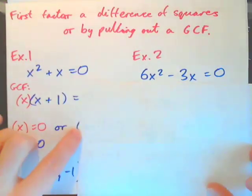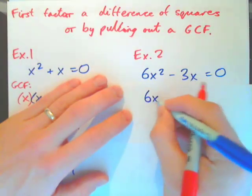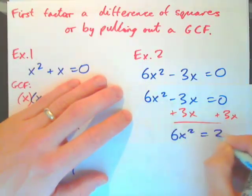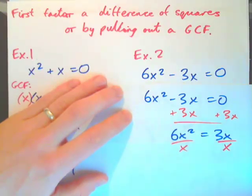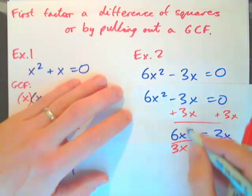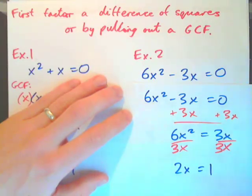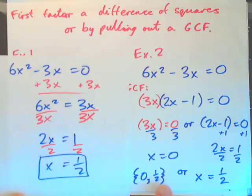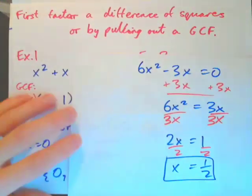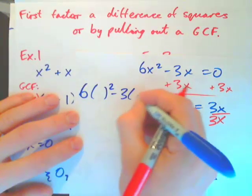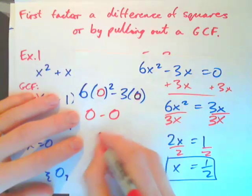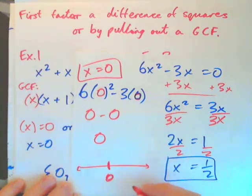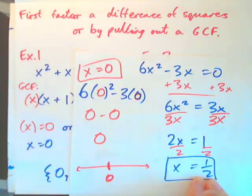Just to show you a common mistake: if you took 6x² − 3x = 0, added 3x to both sides to get 6x² = 3x, and then divided both sides by 3x, you'd get x equals 1/2. That's one of the answers, but you didn't find the x = 0 answer. And 0 is definitely a valid answer. The issue is that at the step where you divided by x, x could actually be 0 — and you're not allowed to divide by 0. So that step was technically incorrect. Don't do it this way.